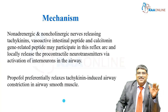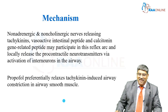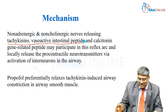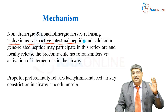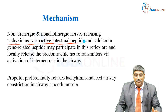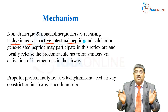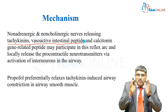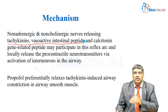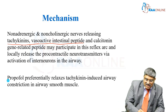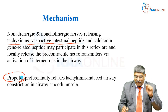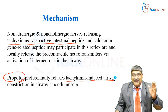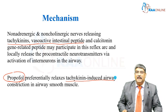Apart from the adrenergic and cholinergic pathways, you have non-adrenergic non-cholinergic mediators: tachykinins, VIP (vasoactive intestinal peptide), and CGRP (calcitonin gene-related peptide), which contribute to this reflex arc causing bronchoconstriction. If you have counters to these neurotransmitters, we can reduce bronchoconstriction. One such drug is propofol, which preferentially acts on tachykinin-induced airway constriction. By countering the tachykinin, it causes bronchodilatation.